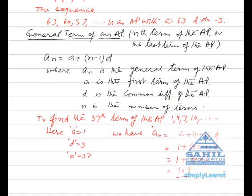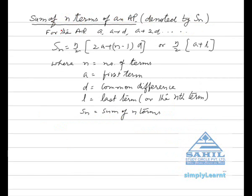To find the 37th term of the AP 1, 4, 7, 10, and so on: here A = 1, D = 3, N = 37. We have the Nth term = A + (N−1) × D = 1 + (37−1) × 3, which simplifies to 109.